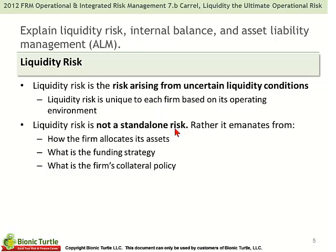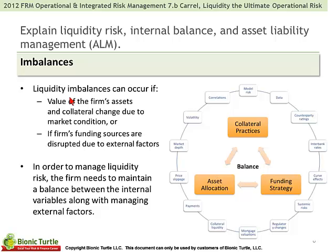Liquidity risk is not a standalone risk, but emanates from how the firm allocates its assets, what the firm's funding strategy is, and what the firm's collateral policy is. In this brief chapter, there's just the notion that liquidity imbalances can occur if the value of the firm's assets or collateral change due to market conditions, or if the firm's funding sources are disrupted due to external factors. Carell says that in order to manage liquidity risk, the firm needs to maintain a balance between the internal variables along with managing external variables.